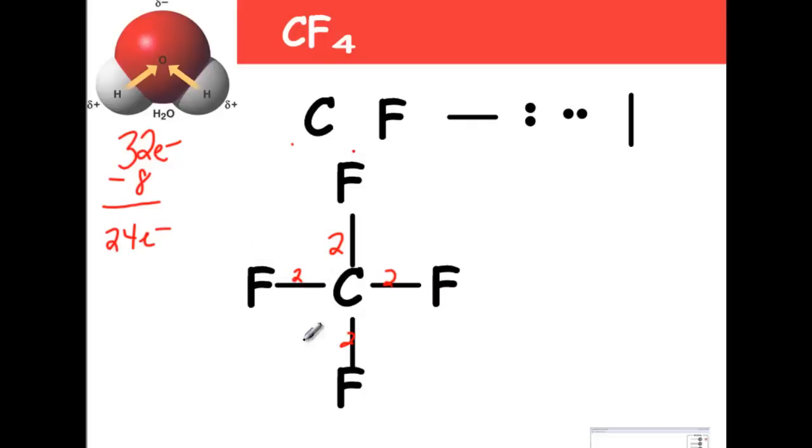Now the next rule is give all the outer guys an octet. So I'm going to use the electrons in my bank to give everybody 8 electrons. So 2, 4, 6 plus the 2 in the bond, that fluorine is happy. This fluorine has 2, 4, 6 in the electron cloud plus 2 more in the bond, so that's a grand total of 8 in that cloud.